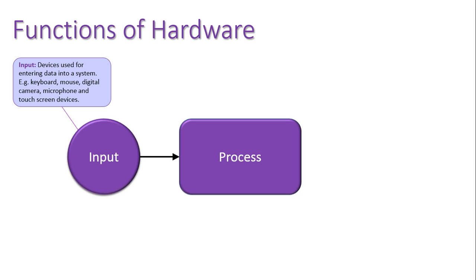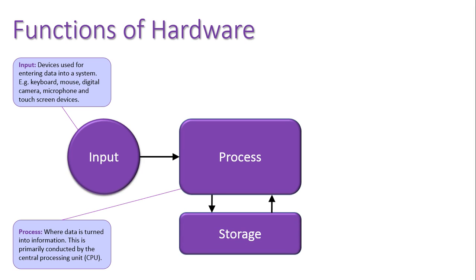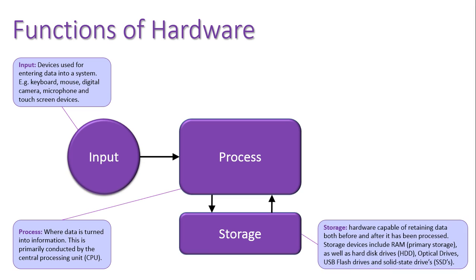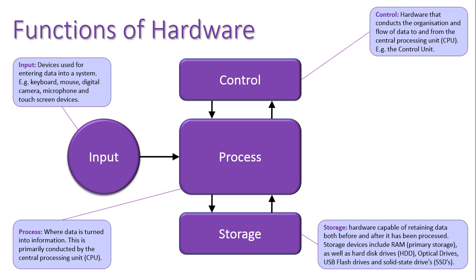We then process this data, and the data is processed by the CPU. It is either being retrieved directly from input or it could be coming from a storage location. The storage location may be live data which is in RAM, or it may be getting retrieved from a secondary storage location such as a hard disk drive, an optical drive, or flash memory. The orchestrator of all this data flowing around is the control area — the control unit — which is sending data to and from the CPU for processing.